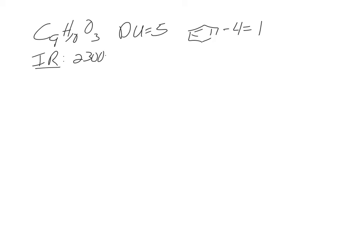The IR has a broad peak from 2300 to 3200, which makes us think either OH or NH. It can't be NH because there are no nitrogens in our formula, so this is an OH. We also have a peak at 1710 — that's a C=O bond — and at 1600, which could be a C=C pi bond or a C=C in the ring.